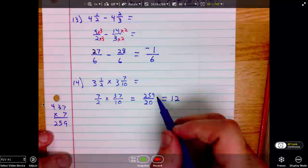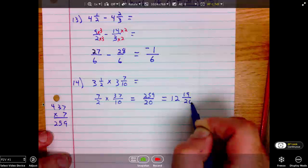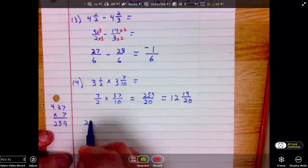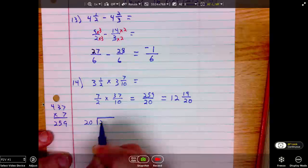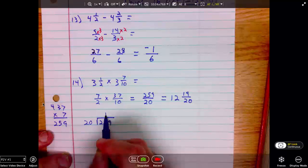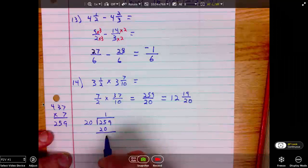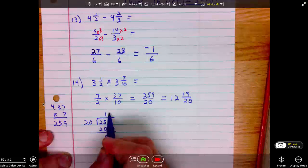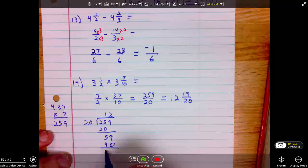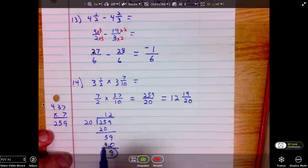259 minus 240 is 19. 12 and 19 over 20. We'll come here to verify this division. 20 into 259. 20 into 2 won't go. 20 into 25 one time. 1 times 20 is 20. Subtracting 5, 9. 20 into 59, 2 times. 2 times 20, 40. Subtracting is 19. This is my remainder. It gets placed over the divisor. 12 and 19 over 20.